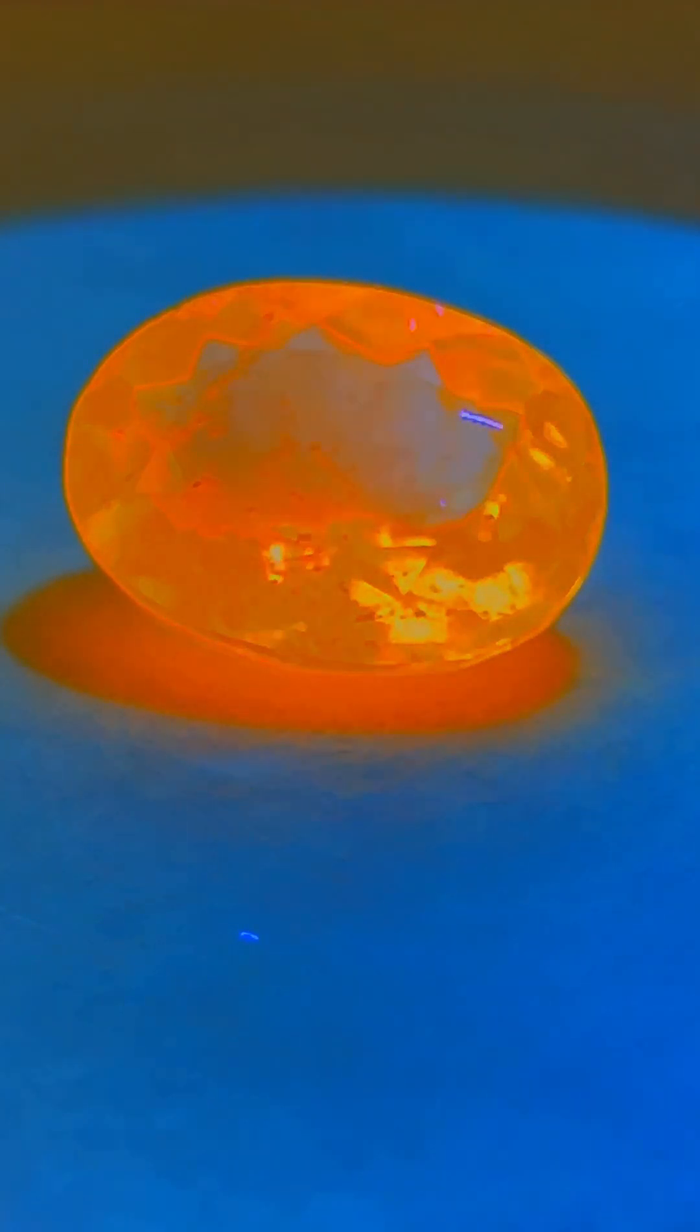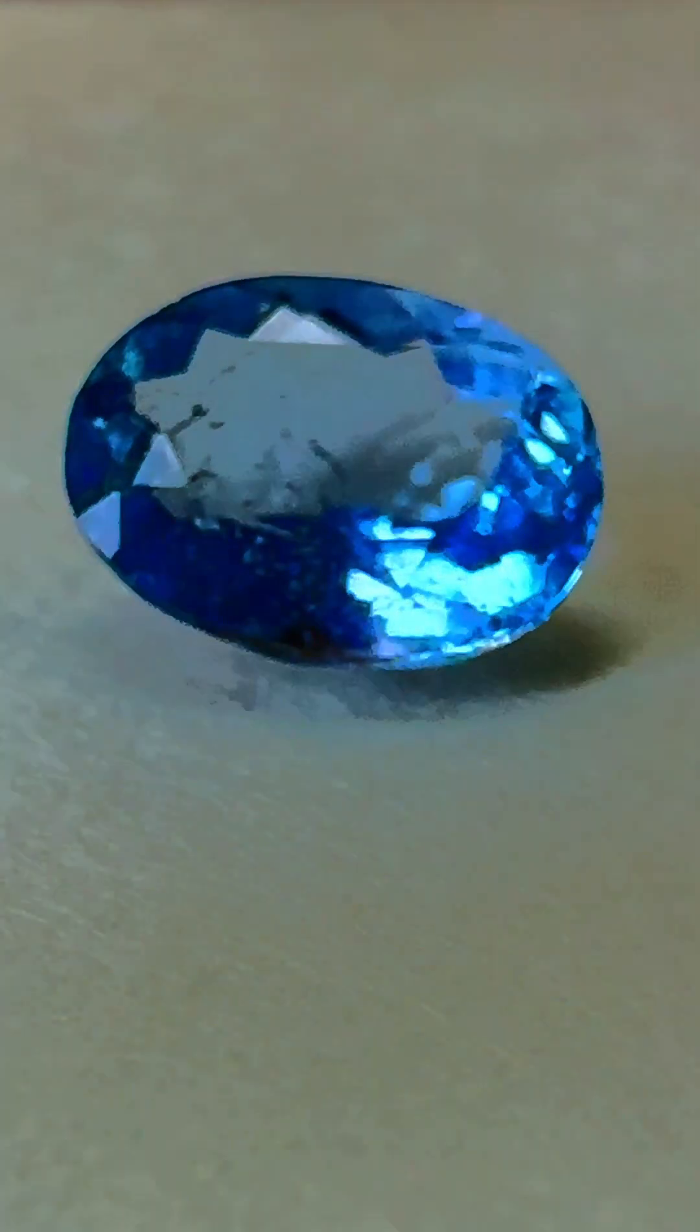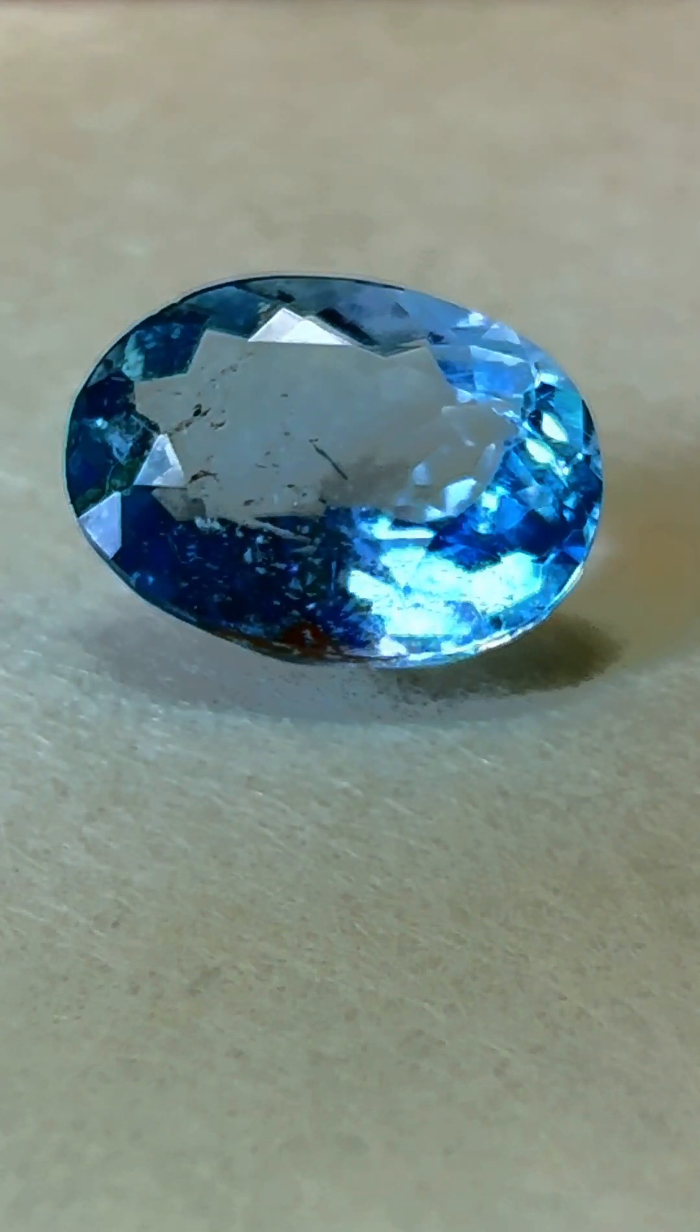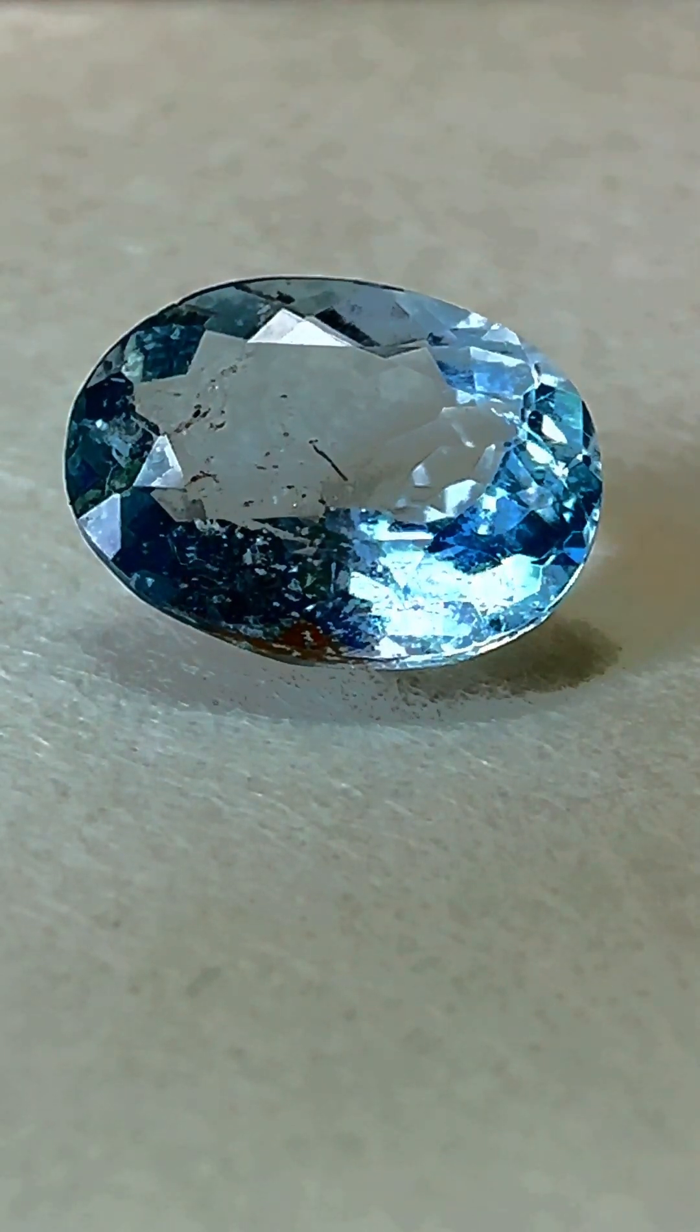But this is even more interesting. Watch what happens when I turn off the ultraviolet light. Isn't that cool? The marialite is now blue, and if you watch closely, you'll notice that the blue color slowly fades.